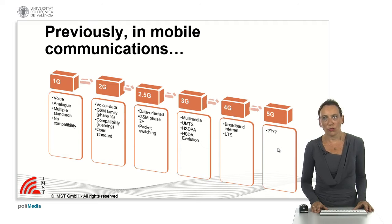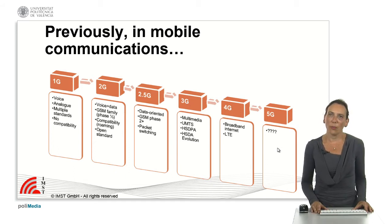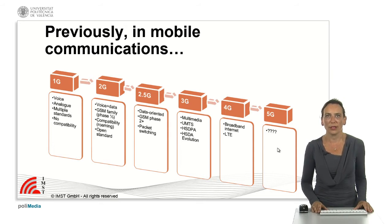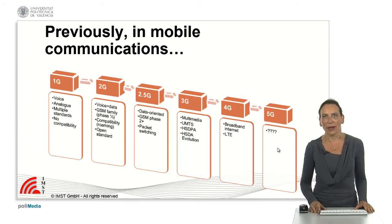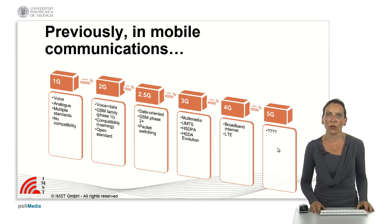Before the third generation was implemented, there was a small step called 2.5G — more data-oriented, known as GSM phase 2+. It was based on packet switching and allowed higher data rates than the second generation, but still not as much as in the third generation. The advent of 3G, called UMTS in Europe, was linked to the possibility of performing multimedia transmission within mobile networks and allowed much higher data rates.